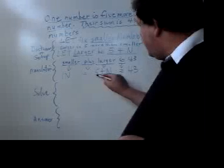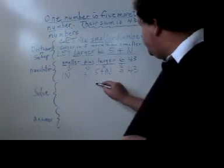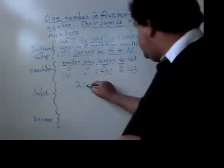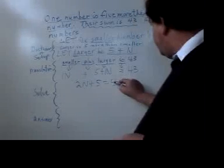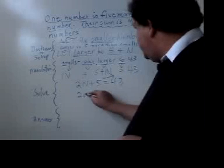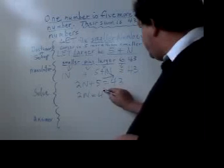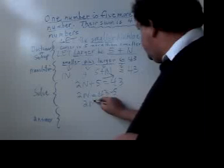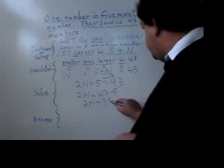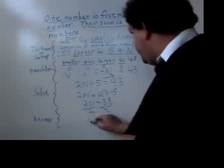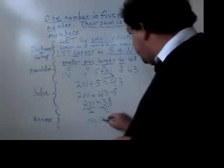Remember, that's the same as one N and one N. So I have 2N plus 5 is 43. Take the 5 to the other side. 2N is 43 minus 5. 2N is 38. Divide by 2. N is 19.